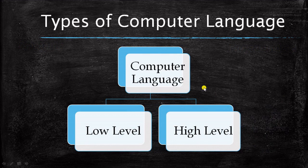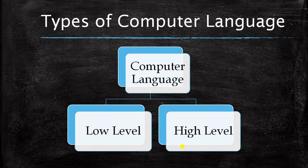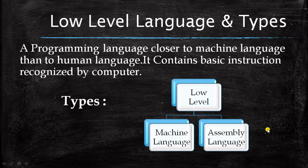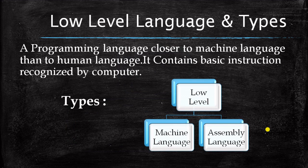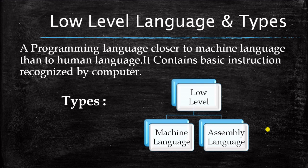Next. Types of computer languages. Computer languages is categorized into two sections. Some is high level language and some is low level. In this section we will be discussing only about low level. High level we will be discussing in the next video. Low level languages. What is a low level language? The languages which are very close and common to machines. They are low level languages. A programming language is closer to machine language than to human language. Because human languages will be higher level languages. Here we see it contains basic instructions recognized by the computer. It is again categorized into two sections. One is machine language. One is assembly language.